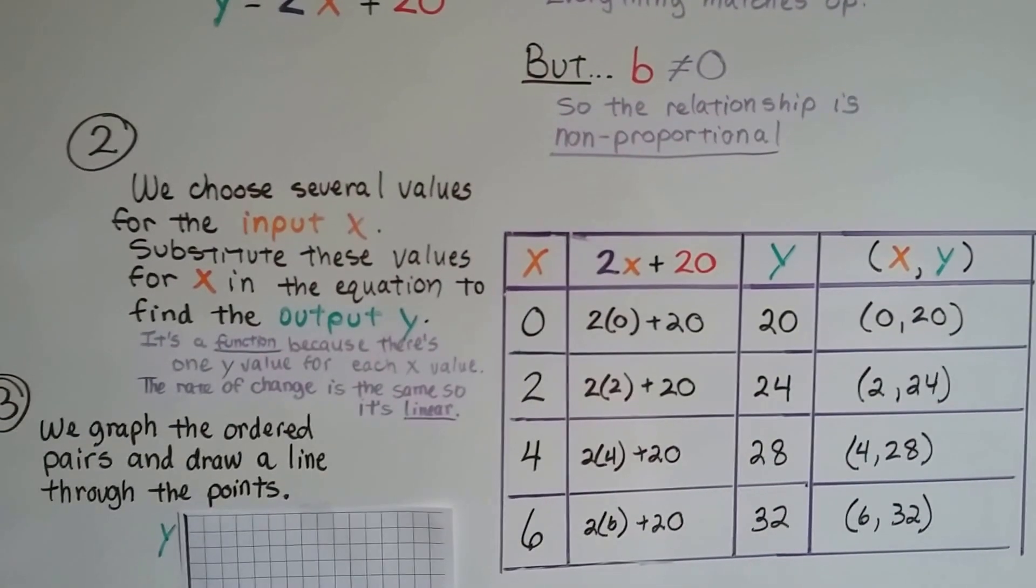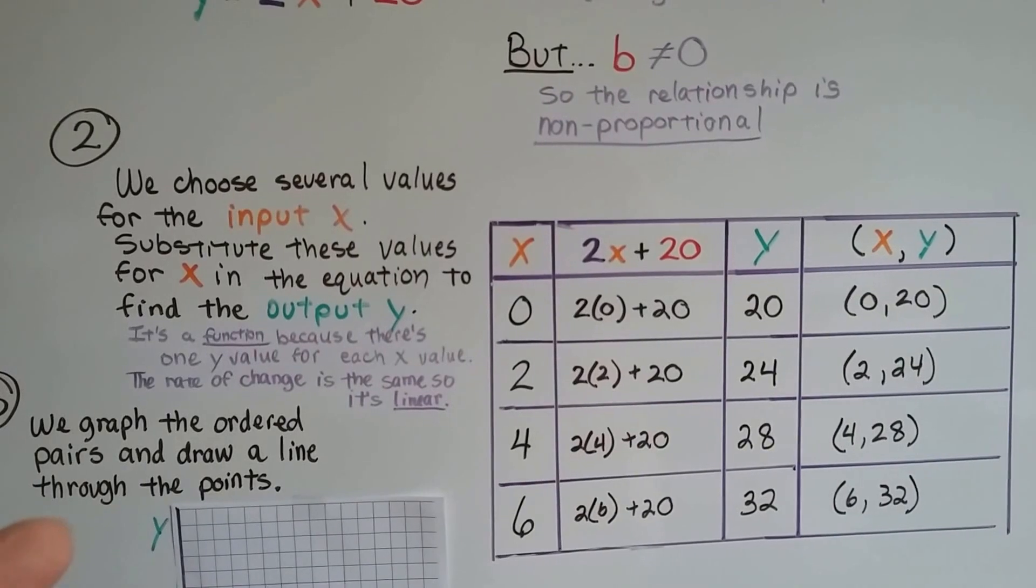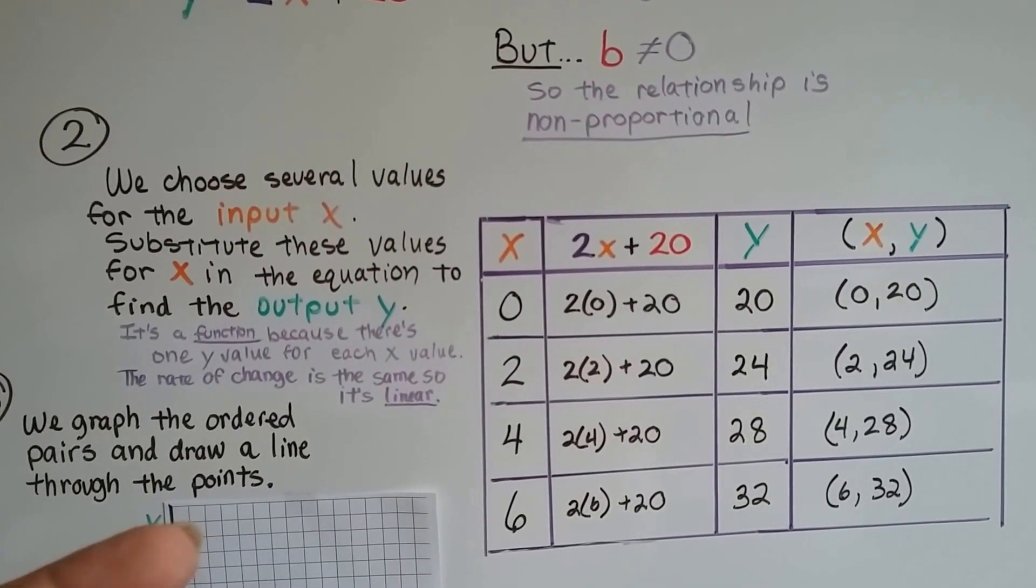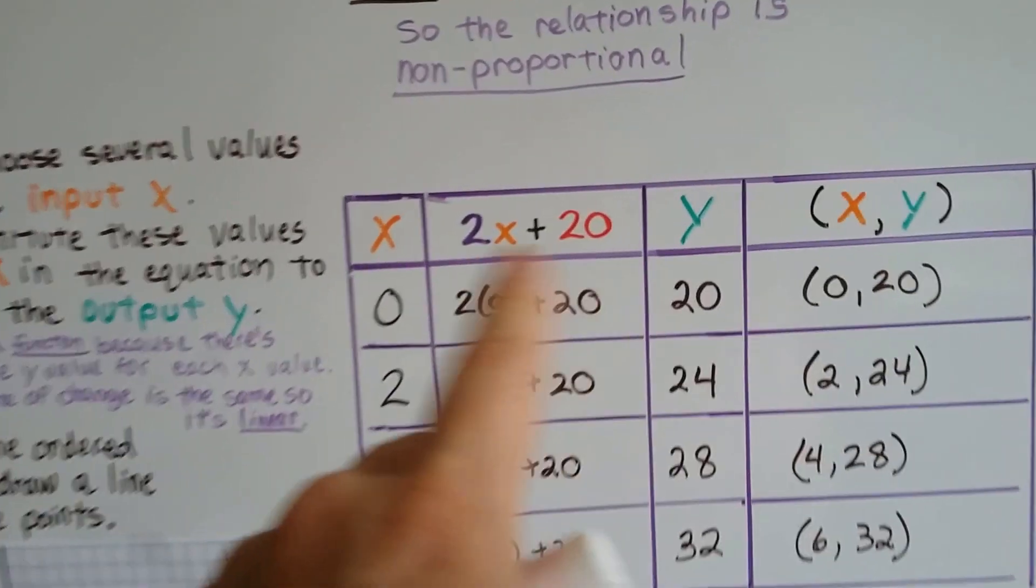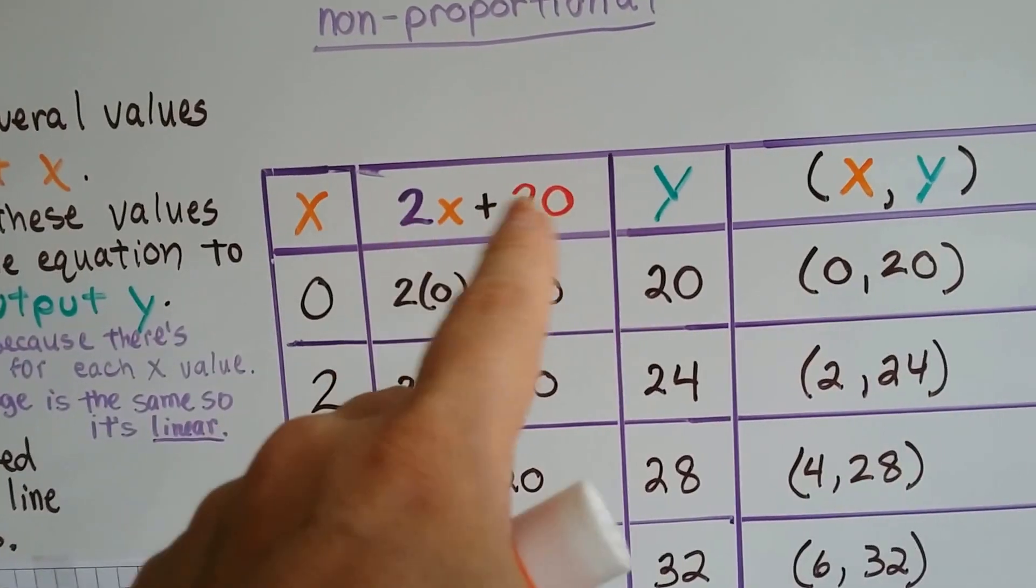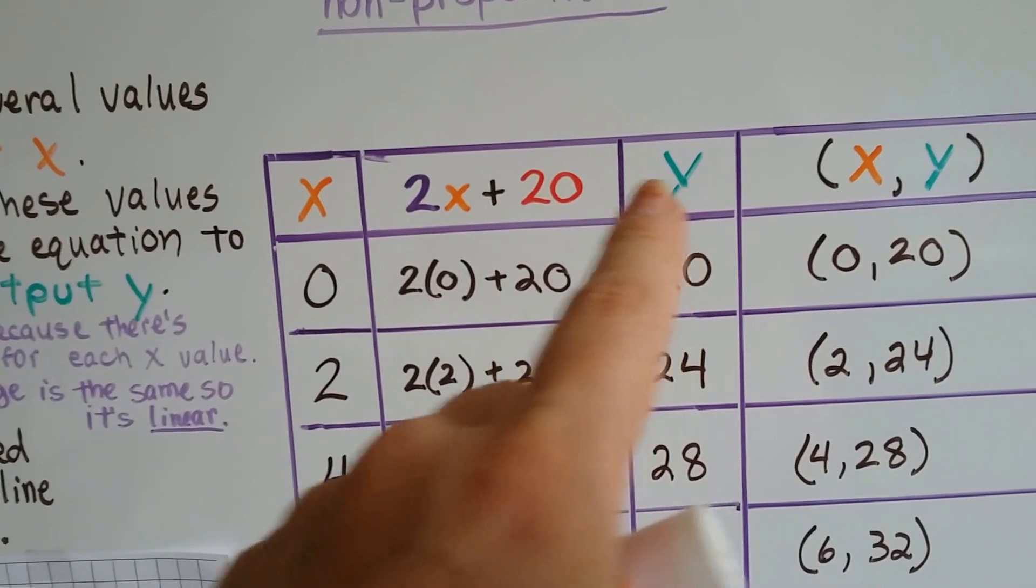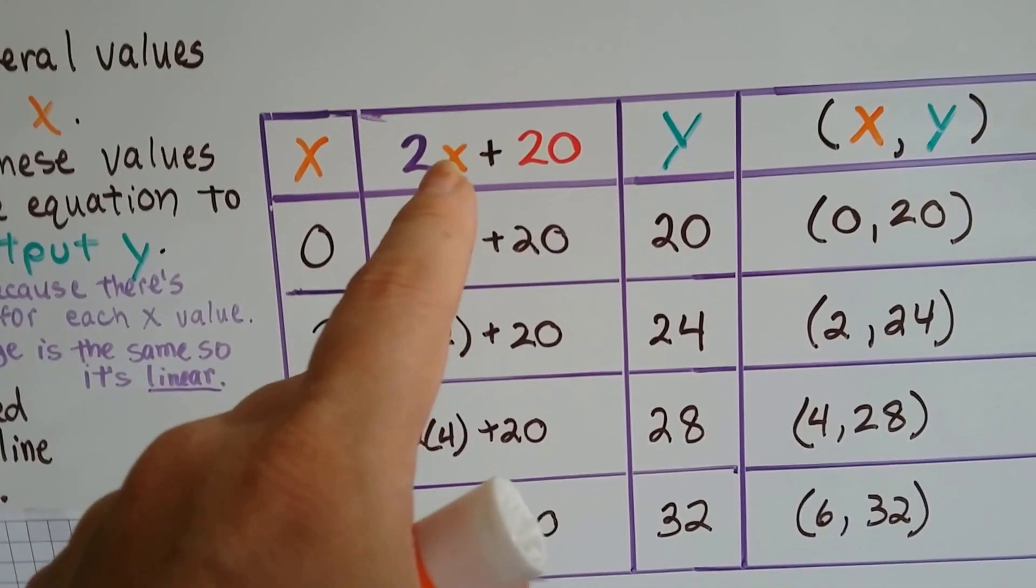We choose several values for the input x, and we substitute these values for x in the equation to find the output y. Here's our equation, 2x plus 20. And whatever this is, is going to equal y when we put in a number for x.